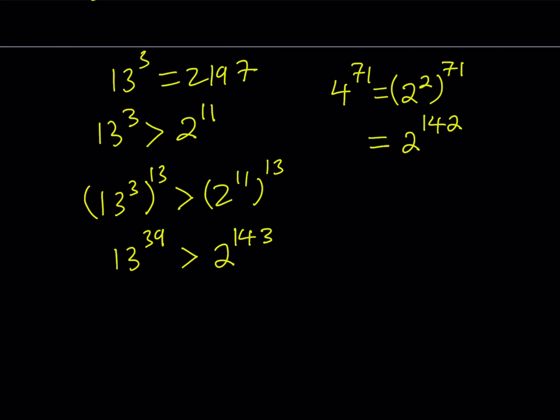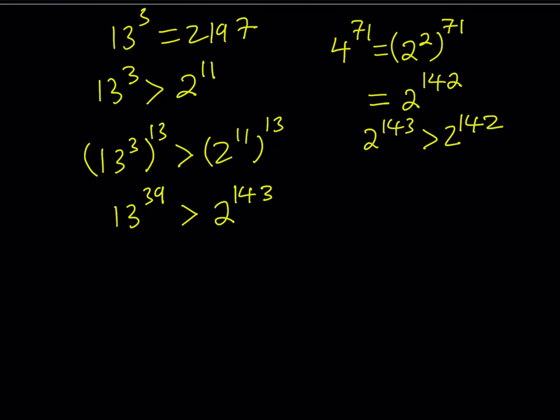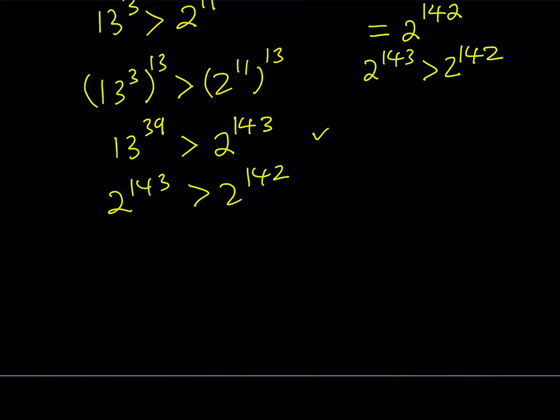So what can I say? Well, I know that 13 to the power 39 is greater than 2 to the power 143, and obviously 2 to the power 143 is greater than 2 to the power 142. So let's put it all together. We have this inequality. We have 2 to the power 143 is greater than 2 to the power 142. Let's make no mistake about it: when the exponent is larger... I messed up in one of the videos with 91 and 90. That was a mistake.